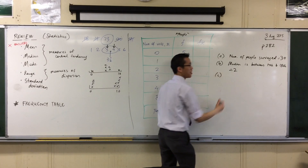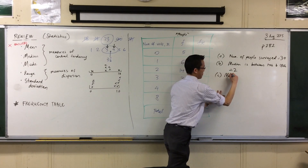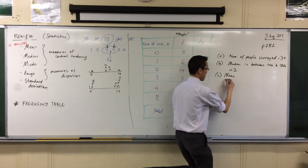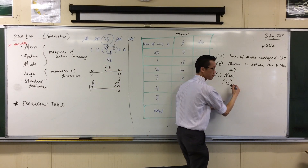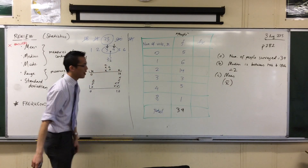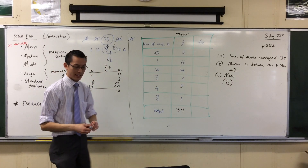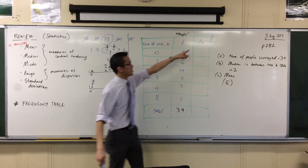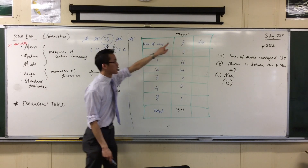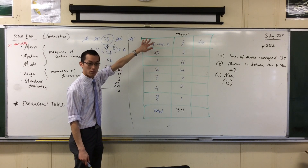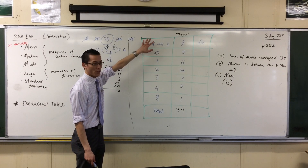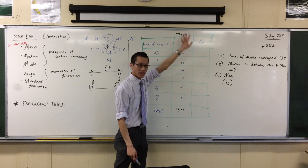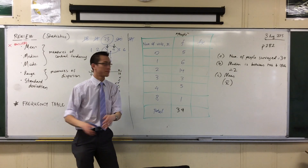Now, the mean. Does anyone remember there's a symbol for mean? It's an X with a little bar over it — X-bar. How do we work out the mean? Here's where we're going to need this extra column — see how this is Fx, the frequency multiplied by however many visits there were. So I'm going to have to multiply these numbers across to get the total number of visits the doctor has gotten.